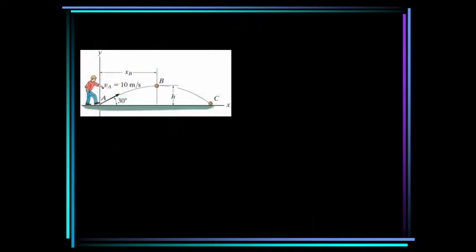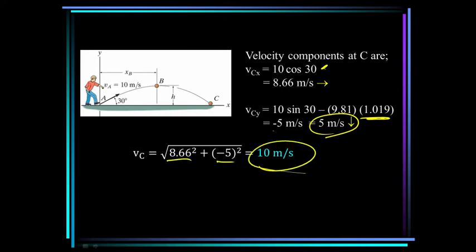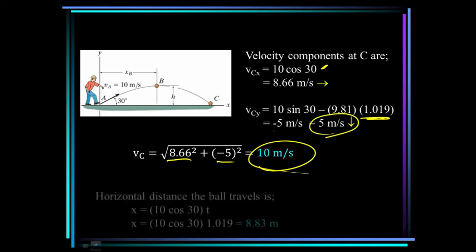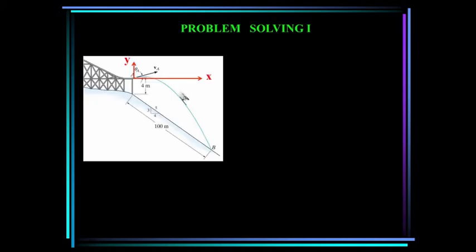The velocity in the x direction is constant at 10 cosine 30. Substituting the time into the y velocity equation gives the y velocity at point C as negative 5 meters per second — negative means downward. We're asked for the magnitude of the velocity, so we take the square root of the sum of squares of the x and y components, giving an answer of 10 meters per second. For the distance traveled, x equals 10 cosine 30 times t, and substituting t gives 8.83 meters.